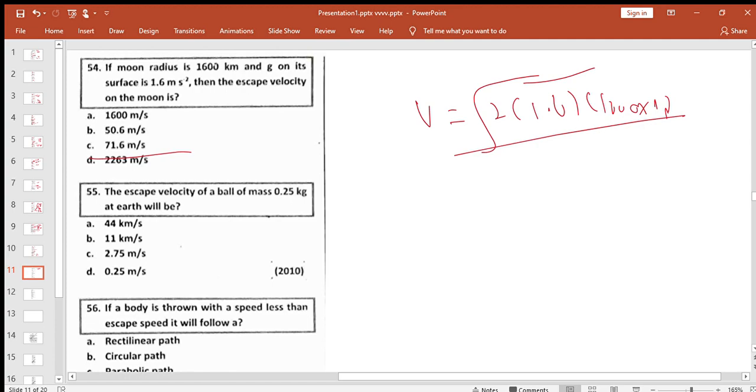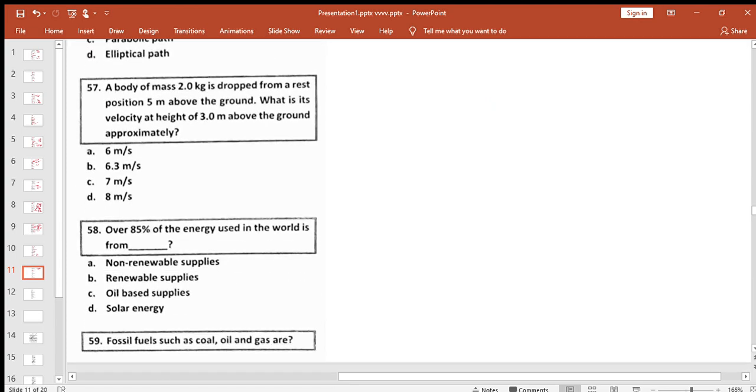The escape velocity does not depend on mass. If a body is thrown with speed less than escape velocity, it will follow a parabolic path and come back.